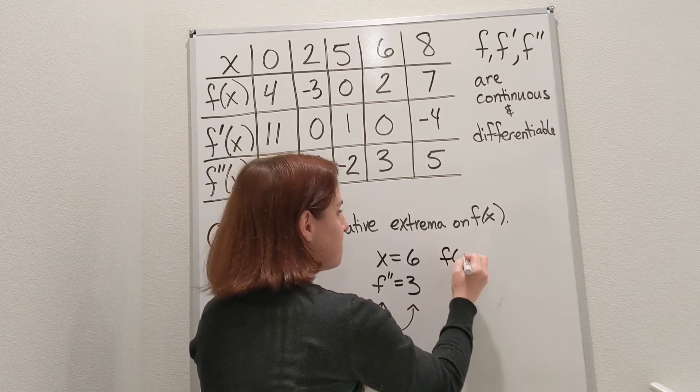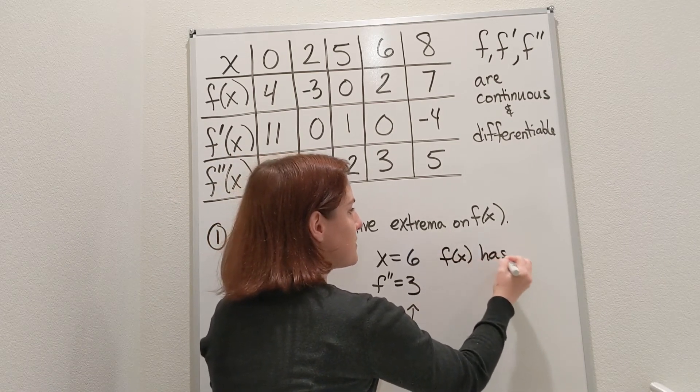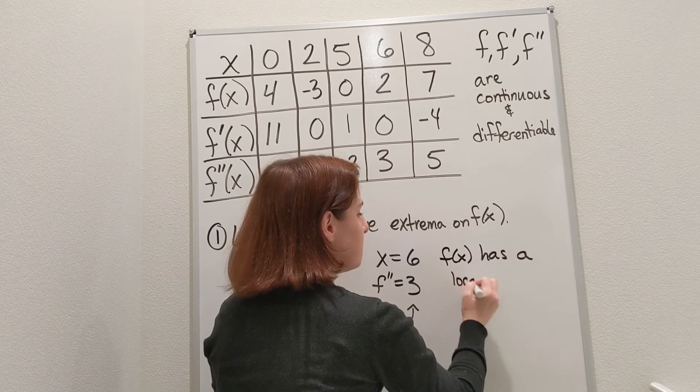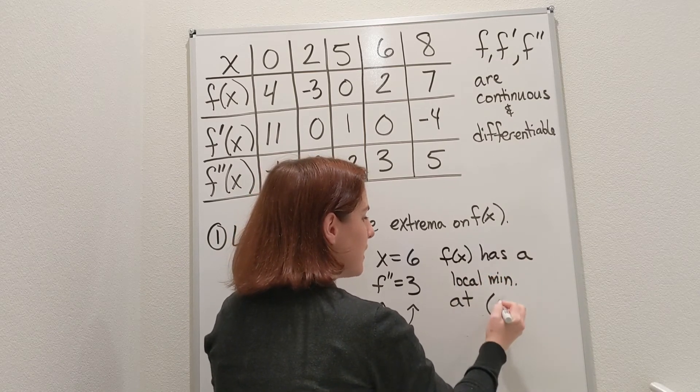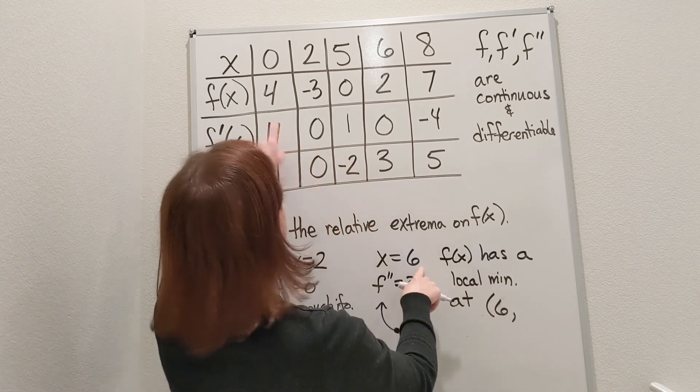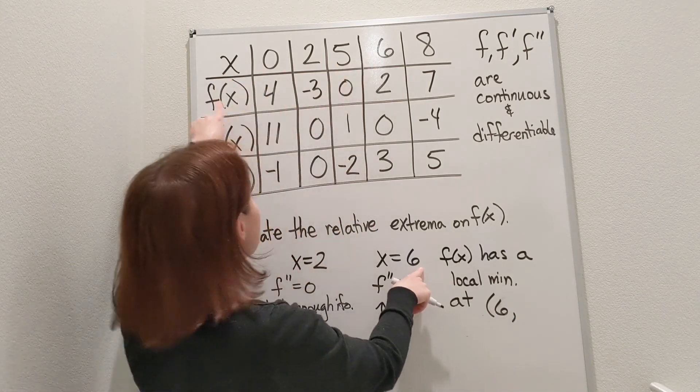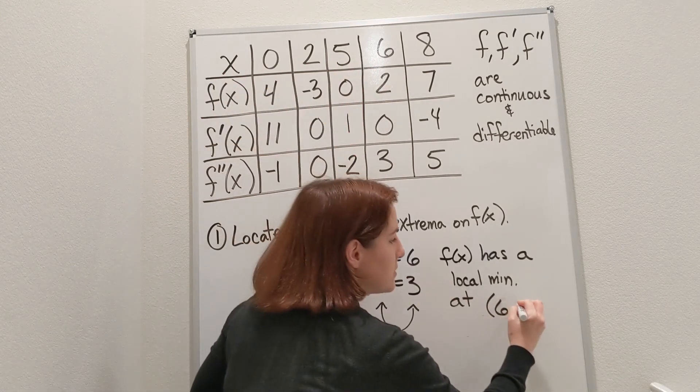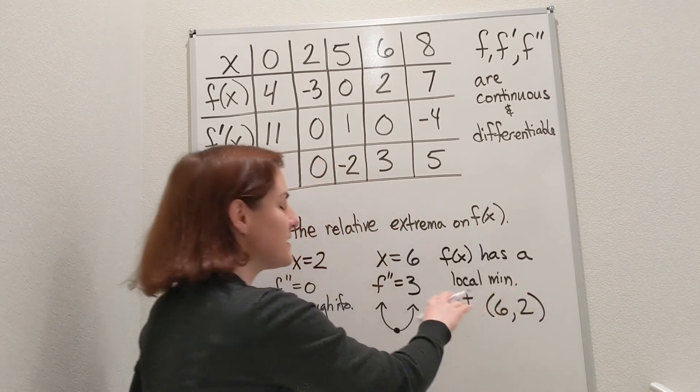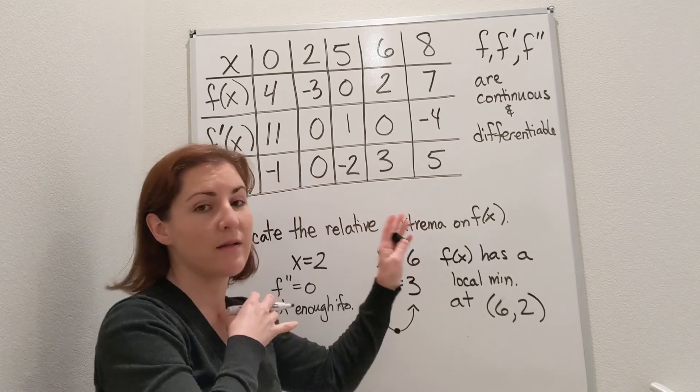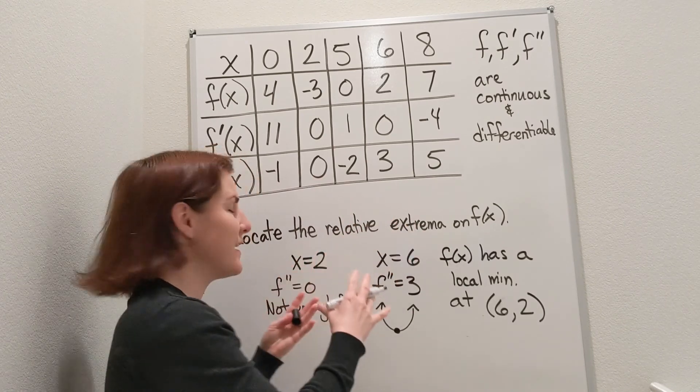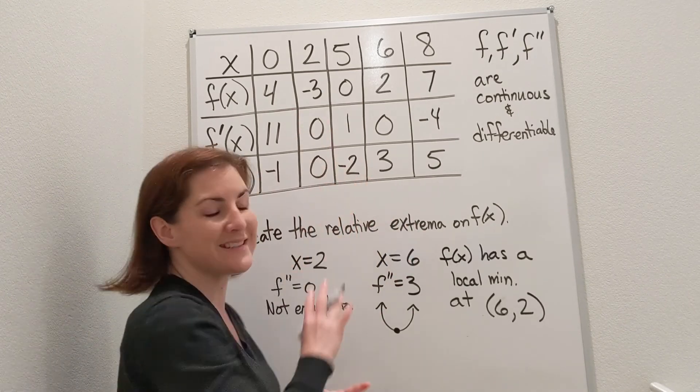So I know that f(x) has a local minimum at x=6. Let's get the y value so we can get the point. When x=6, f(x) equals two. So (6,2) is a local minimum for f(x). And that's all the information about local minimums and maximums that we're able to get out of that table.